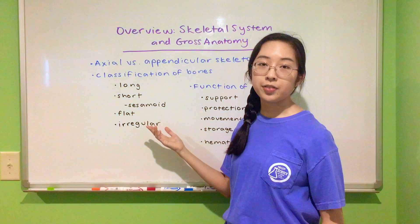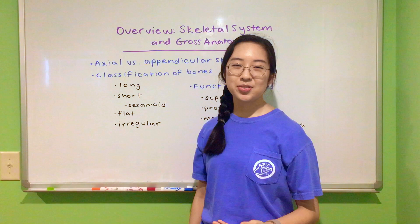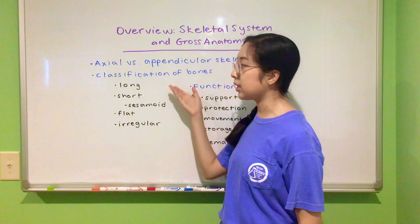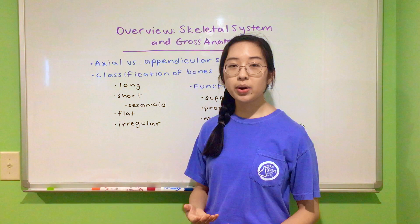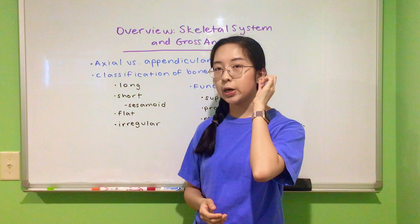The third category are flat bones, which are like two flat edges sandwiching spongy bone in the middle. Classic examples include the bones in your cranium, your sternum, and scapula. Lastly, we have irregular bones, which are oddly shaped and don't fit cleanly into any of the other categories. Examples include your hip bone, which is a very strange three-dimensional shape, and the tiny little bones in your ear — your auditory ossicles.